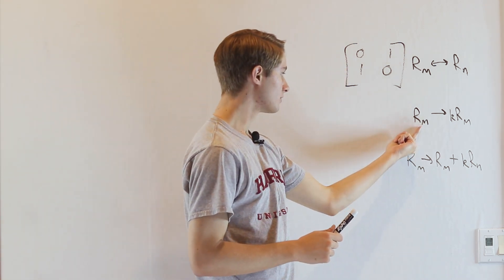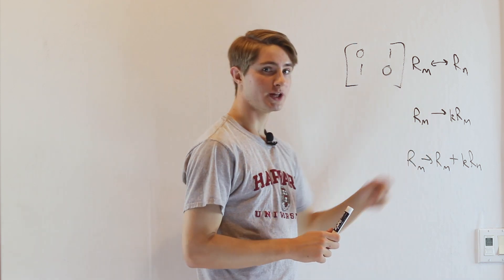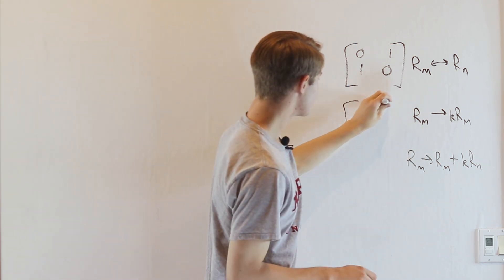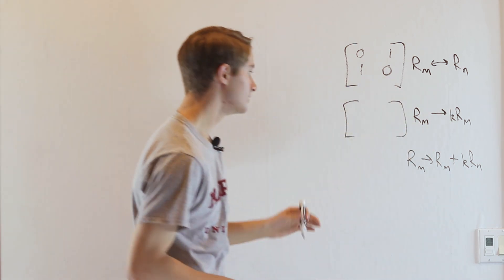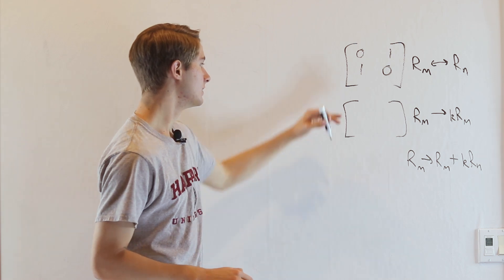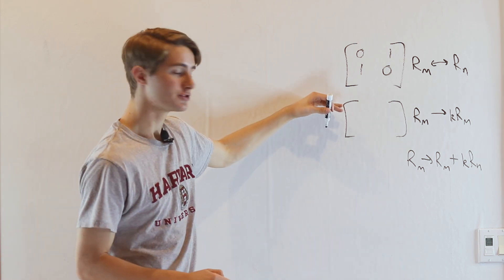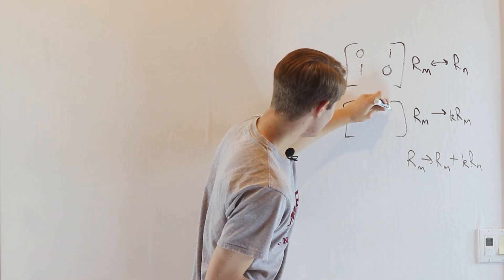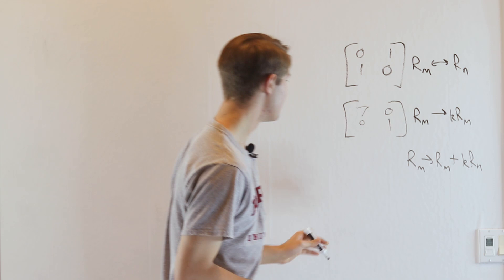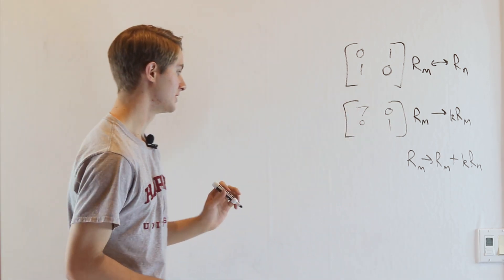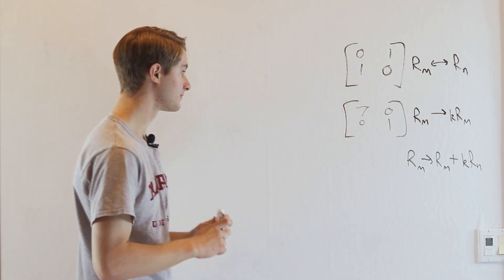Another type is we take a row and multiply it by a constant. For example, if we take [[1, 0], [0, 1]] and multiply the first row by 7, then we get [[7, 0], [0, 1]]. So that is another type of elementary matrix.